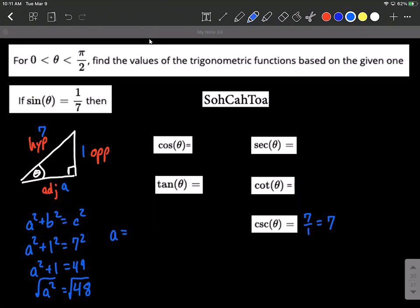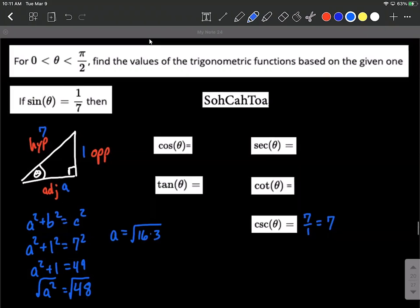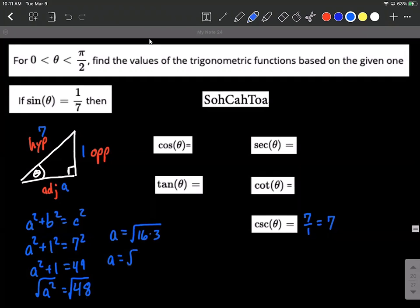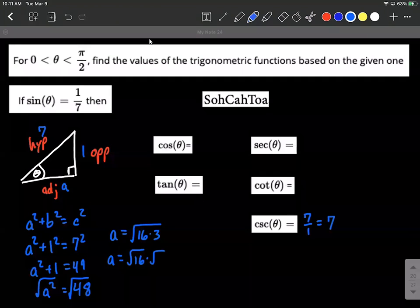Now as far as breaking this down further, I think we can think of 48 as 16 times 3 will give us 48. And why we'd want to split it up in this fashion is because 16 is a perfect square. So you can further reduce by taking the square root of 16 times the square root of 3. So we have 4 times the square root of 3 is a.